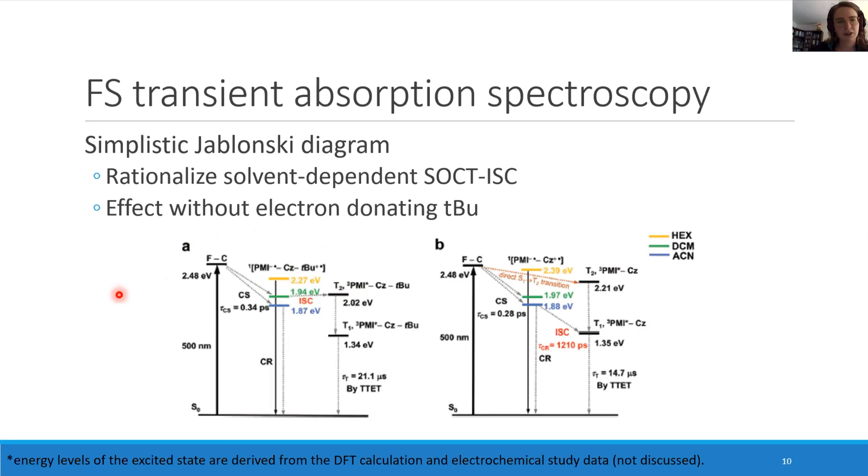Because previous research has proposed that the existence of a Tn state of similar energy levels as the charge transfer states are beneficial for the SOCT intersystem crossing. So it is proposed that the intersystem crossing occurs via the charge transfer state to the T2 state, followed by internal conversion to the T1 state.